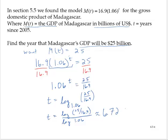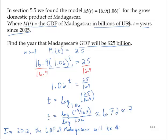Thinking about t — t is in terms of years, so let's round that up to 7. T was the number of years since 2005, so my conclusion is: 7 years since 2005, in 2012, the GDP of Madagascar will be about $25 billion.